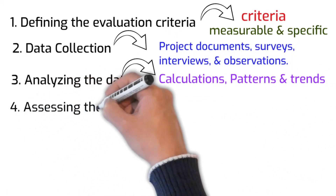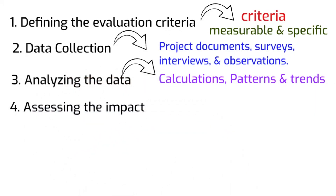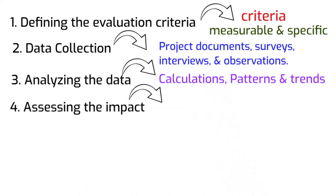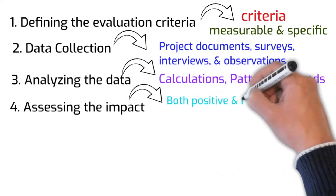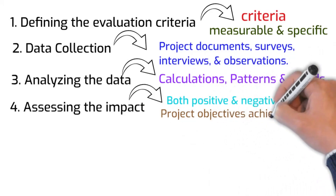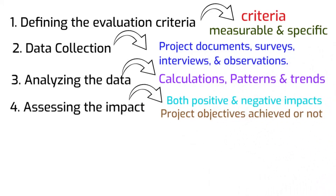Number four is assessing the impact. After data analysis, we can assess the impact of the project on stakeholders, including customers, employees and partners. We need to consider both positive and negative impacts. We can also compare the project performance against its initial goals and objectives. This process helps us determine if the project has achieved its intended outcomes, and if not, why.